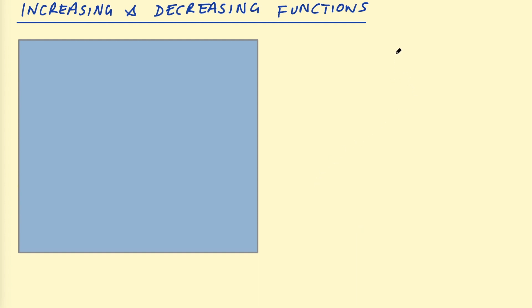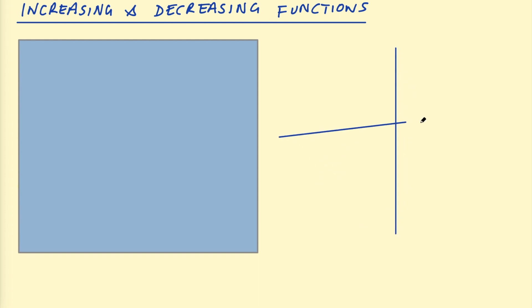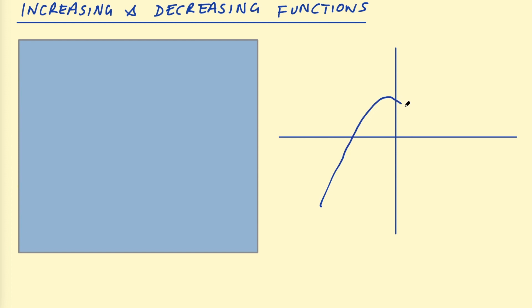Let's sketch a quick function here — some random cubic. It doesn't matter the specifics about the function, but let's say it cuts the x-axis around negative 2 or something, and it'll look something like this.